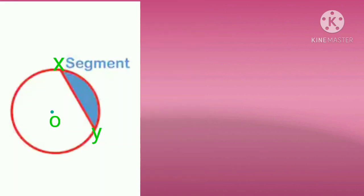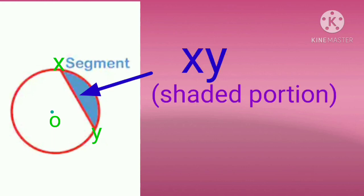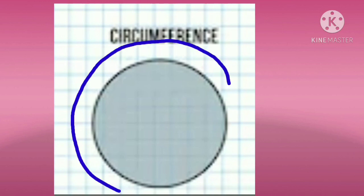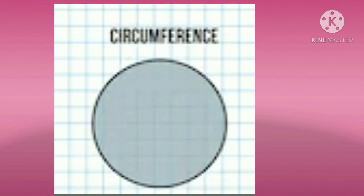The next part is the segment of the circle. A region in the interior of a circle enclosed by a chord and an arc is called a segment of the circle. So, the portion enclosed by a chord and an arc together is called a segment. And next, circumference — the distance around the circle is its circumference.